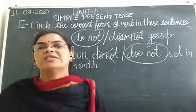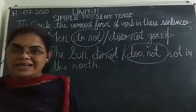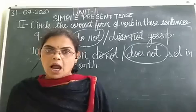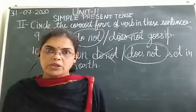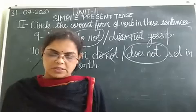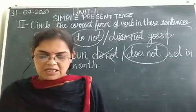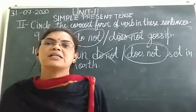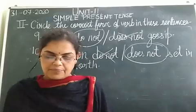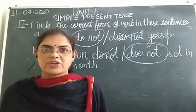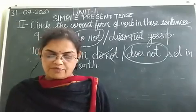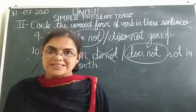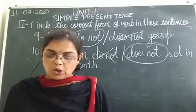I am once again leaving all the sentences with the correct options — please tally. First: Rhea knows all the answers, circle 'knows.' Second: Tithi takes dance classes every Sunday, circle 'takes.' Third: they follow all the traffic rules, circle 'follow.' Fourth: when he goes to school, some boys tease him — circle 'goes' and 'tease.'